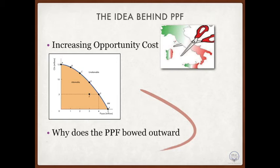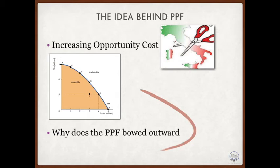Now let's look into some questions about PPF. The first is: why is opportunity cost increasing in PPF? I'll explain this both theoretically and mathematically. The mathematical part will be covered in the PPF opportunity cost calculation tutorial video. In this video, let's just look into the theoretical aspect. Given our current resources and technology, we can produce more pizzas only if we produce fewer CDs. The opportunity cost of producing an additional pizza is the number of CDs we must forgo, and similarly, the opportunity cost of producing an additional CD is the quantity of pizzas we must forgo. Basically, the idea is: to get more of one, we have to give up more and more of the other.